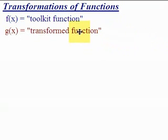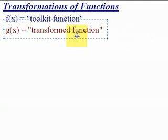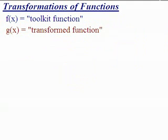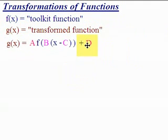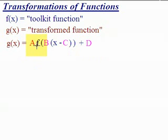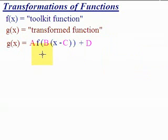G of x is going to be the transformed function — that is the way we change f of x. Understanding functional notation is important to recognize how g of x is really a transformation of f of x, a change. These changes are called parameters. A, B, C, and D are the parameters, and each parameter has a specific function.